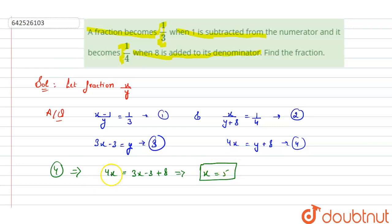Where we are getting the fraction, because 3 into 5 is 15 minus 3 is equals to y, that is 12. Value of y is equals to 12. So these two are the values of x and y.